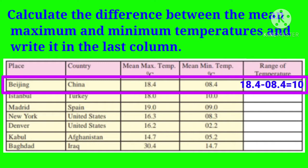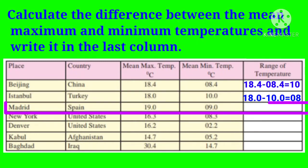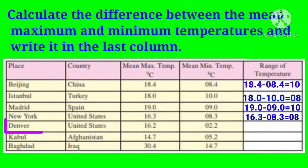The first place is Beijing, China. Mean maximum temperature is 18.4 degrees Celsius, mean minimum temperature is 8.4 degrees Celsius, and the range of temperature is 10 degrees Celsius. The second place is Istanbul, Turkey. Mean maximum is 18 degrees Celsius and mean minimum is 10 degrees Celsius. The third place is Madrid, Spain. Mean maximum is 19 degrees Celsius, mean minimum is 9 degrees Celsius, and the range is 10 degrees Celsius. The fourth place is New York, United States. Mean maximum is 16.3 degrees Celsius and mean minimum is 8.3 degrees Celsius, giving a range of 8 degrees Celsius.